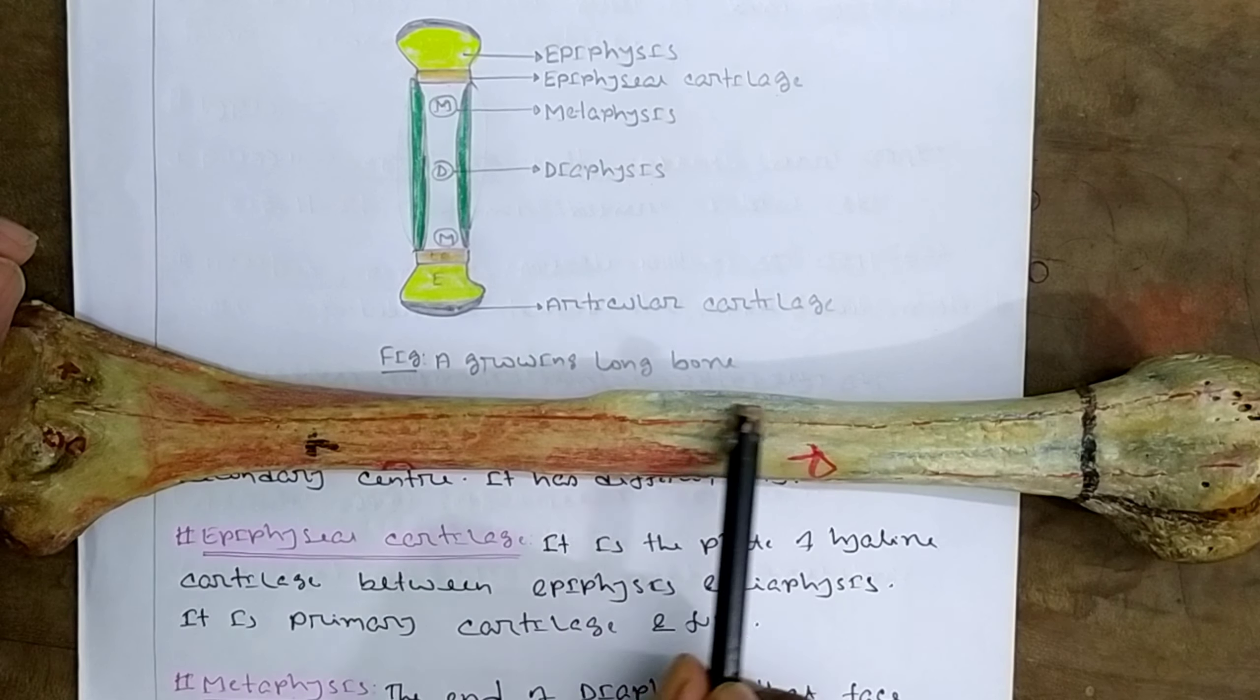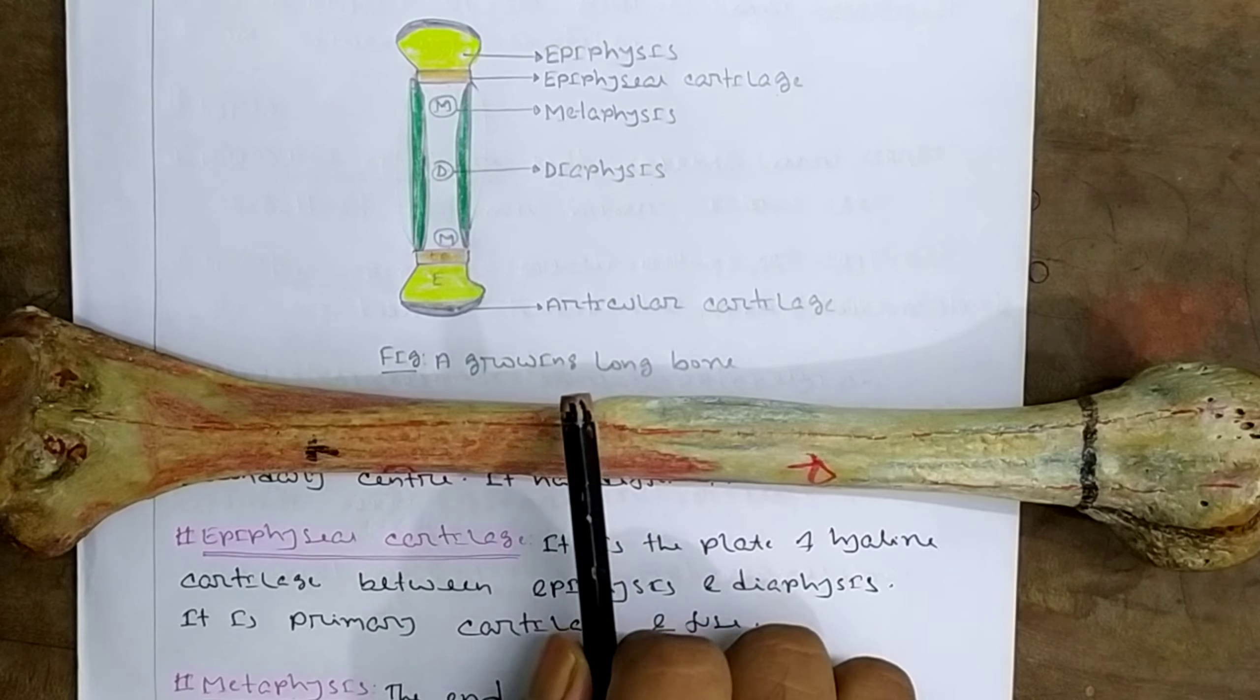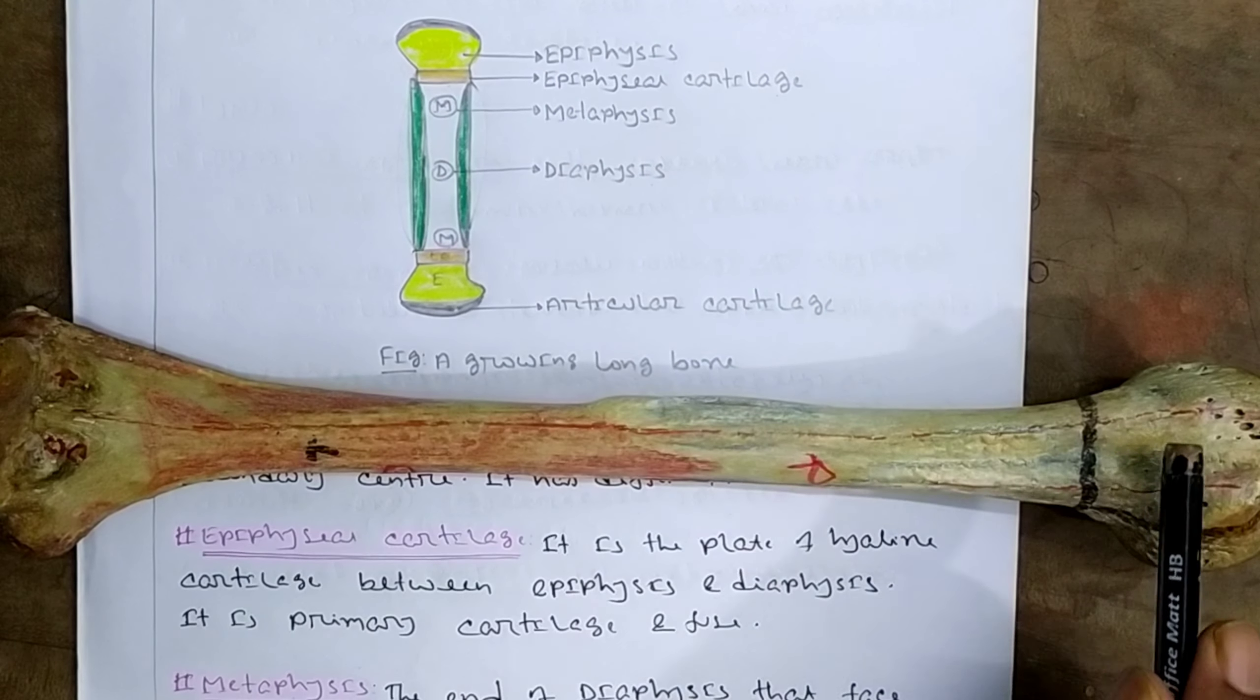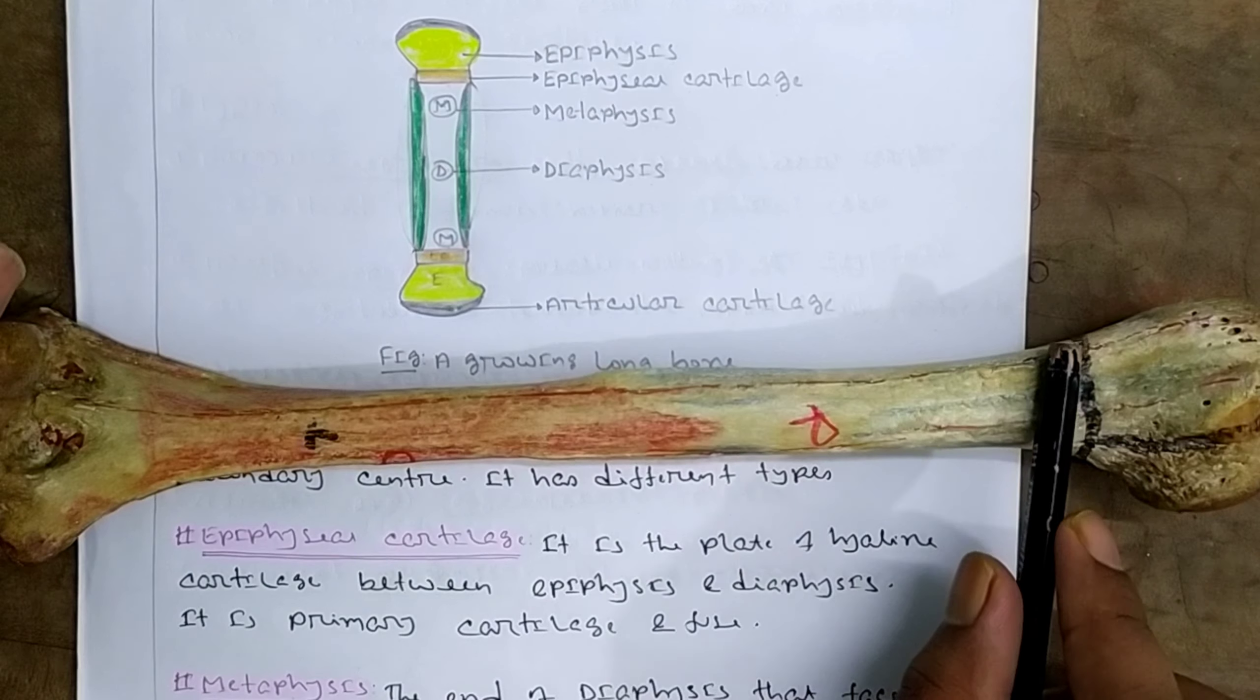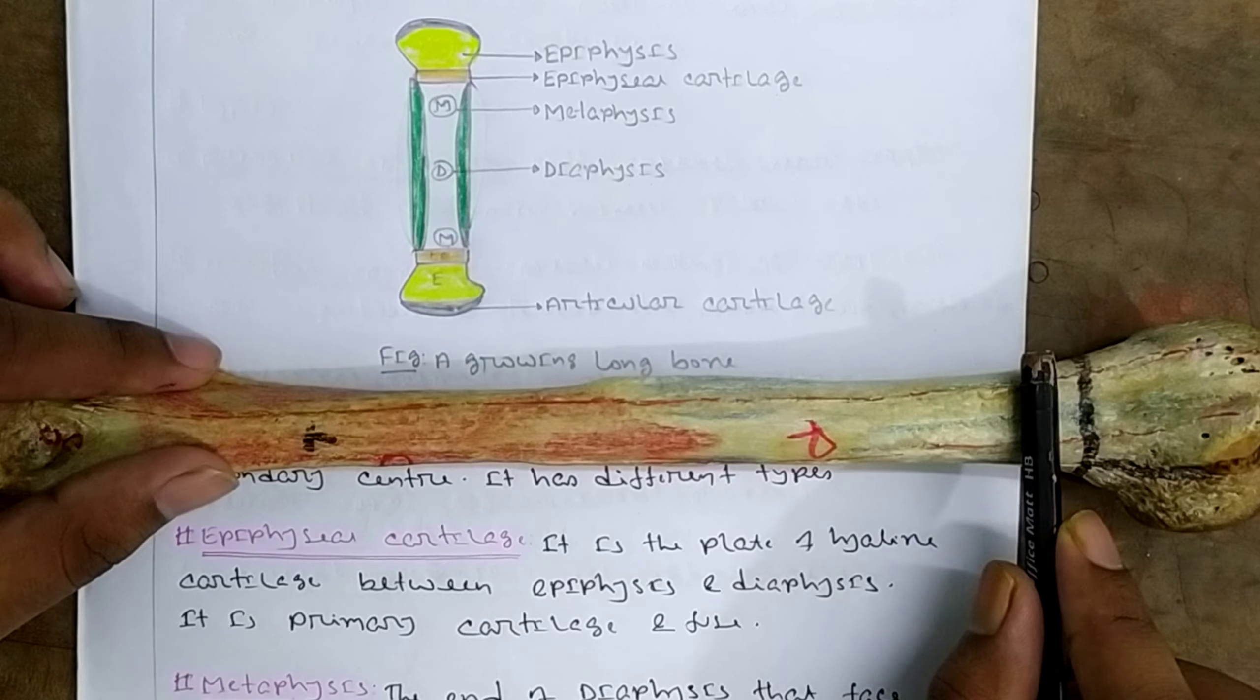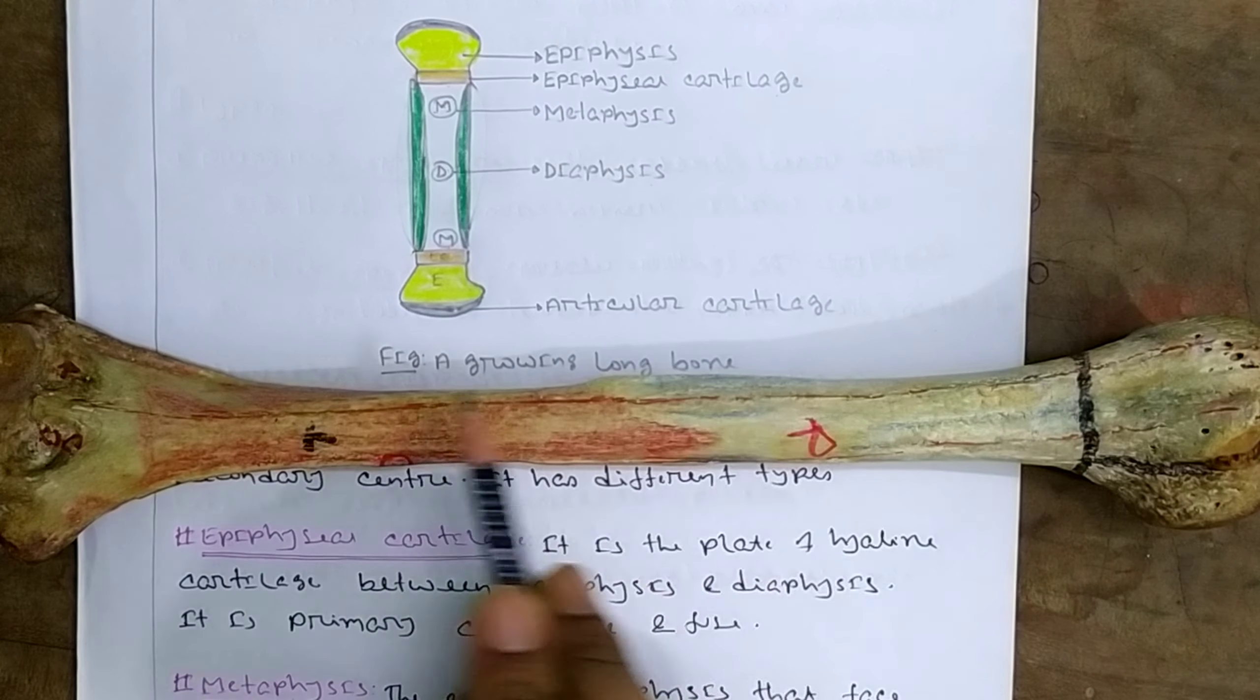The diaphysis is formed from the primary center. The upper and lower parts, which are the epiphysis, are still being formed. This is the primary center.